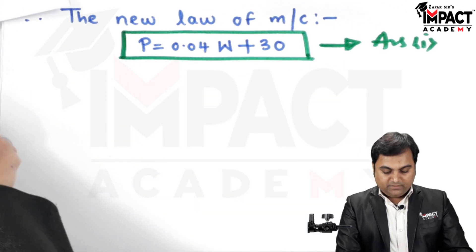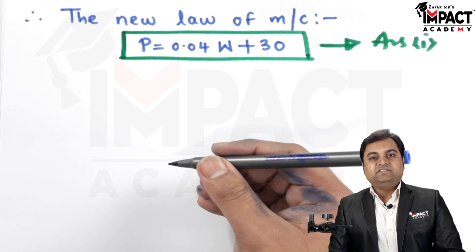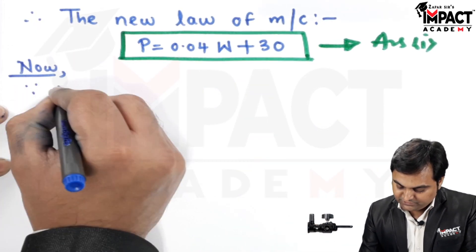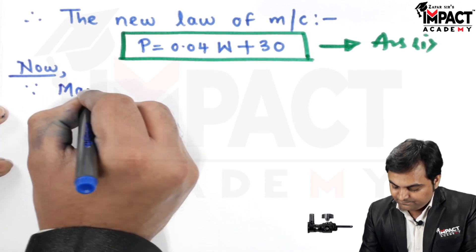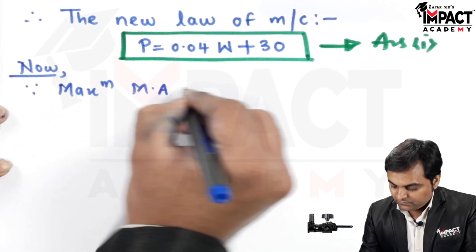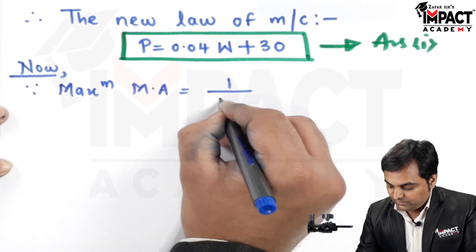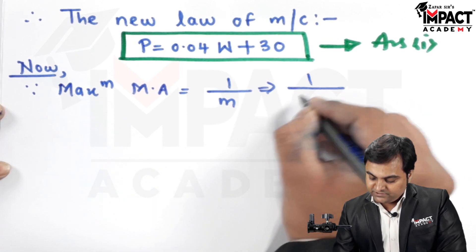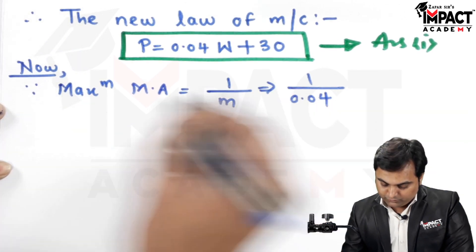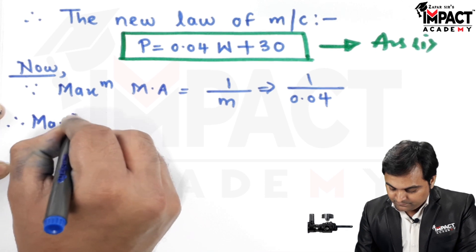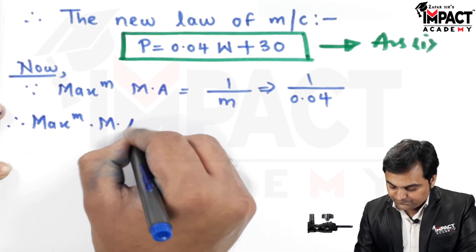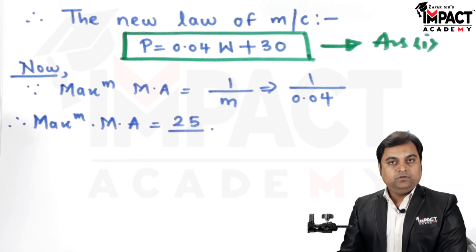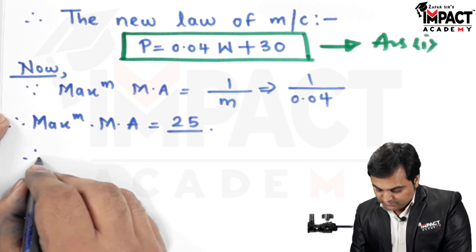They have also said that we have to find the maximum efficiency. First, I will write down that the maximum mechanical advantage is given by 1 upon M, where M is the slope in the law of machine. That slope is 0.04, so therefore the maximum mechanical advantage will be 25.